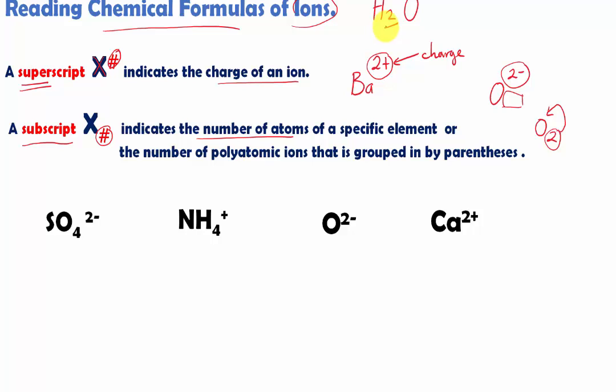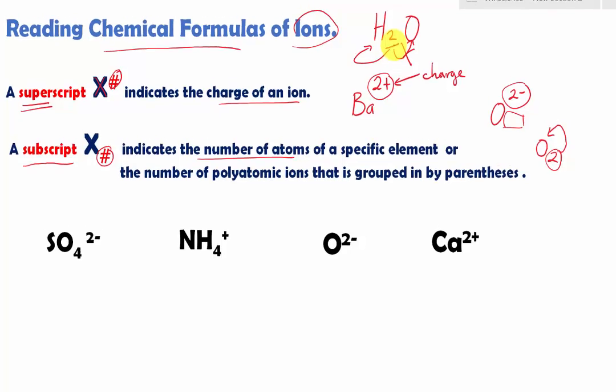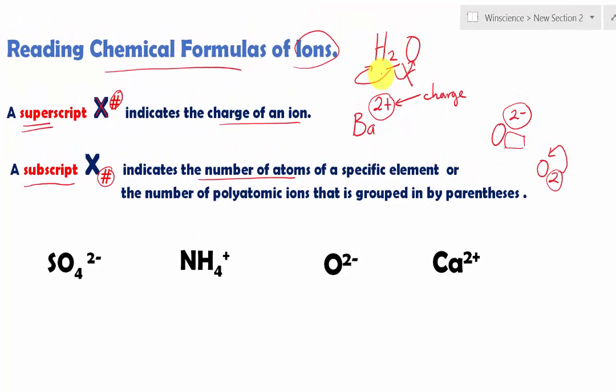Or we can go back to H2O. See that two right there? That tells you there are two of the hydrogen atoms. So it tells you the number of atoms of a specific element. This two does not apply to oxygen. It's only applied to the element symbol that's going in front of the number.